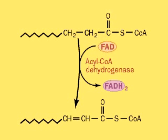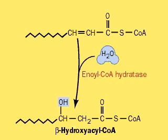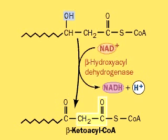Enoyl-CoA hydratase hydrates the molecule by adding water across the double bond, forming beta-hydroxyacyl-CoA. A second oxidation uses beta-hydroxyacyl-CoA dehydrogenase and the oxidizing agent NAD+ to make beta-ketoacyl-CoA.